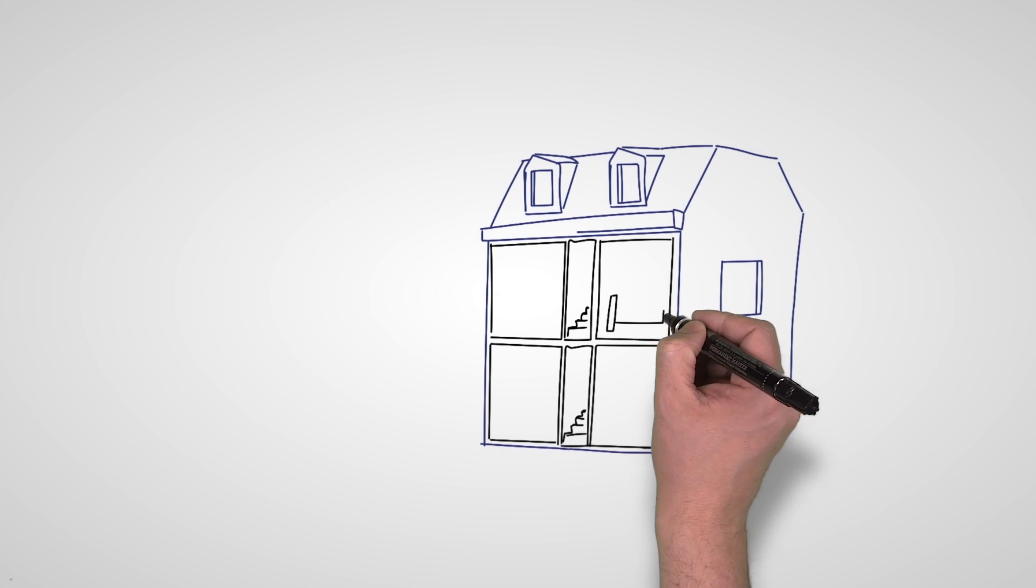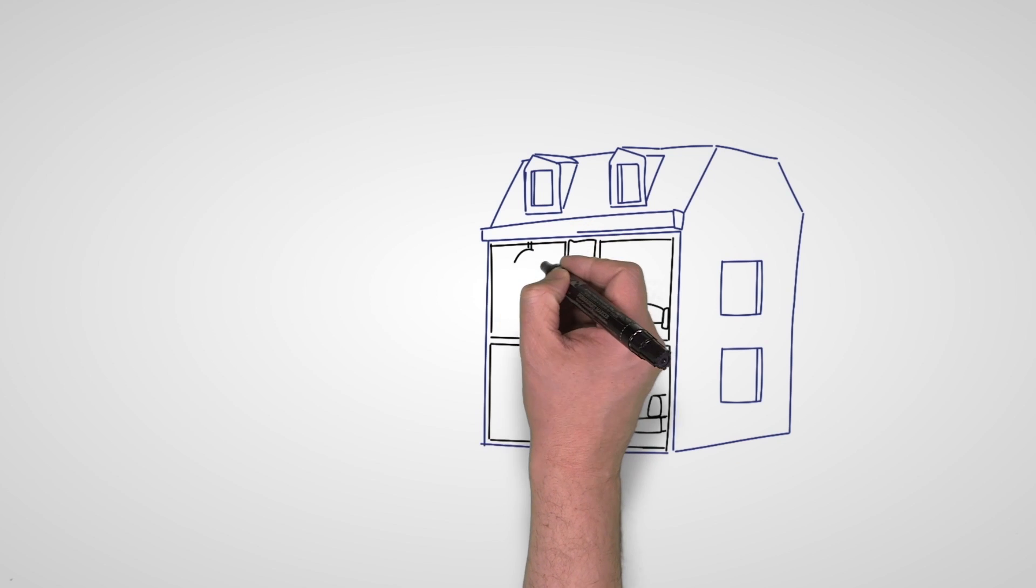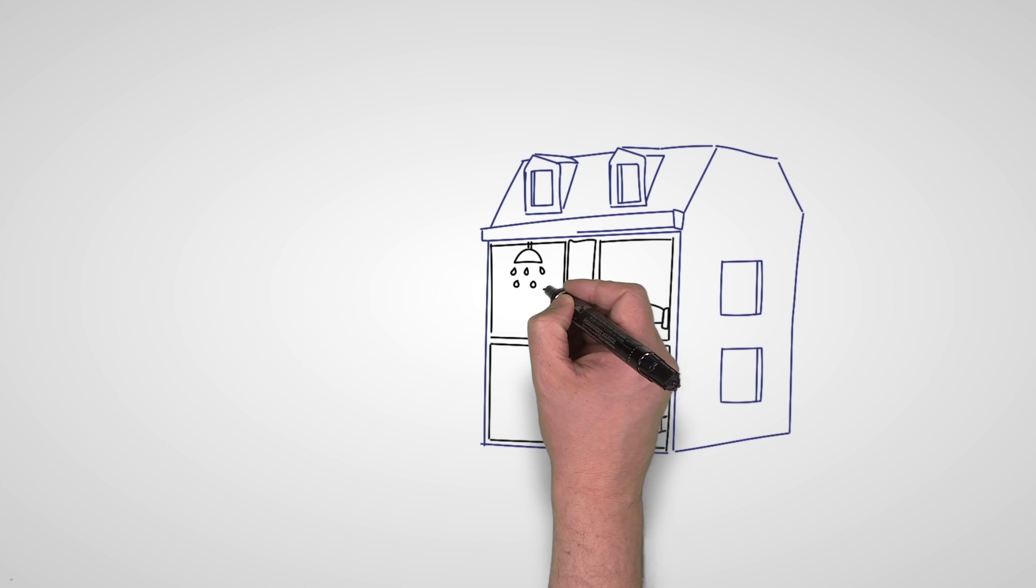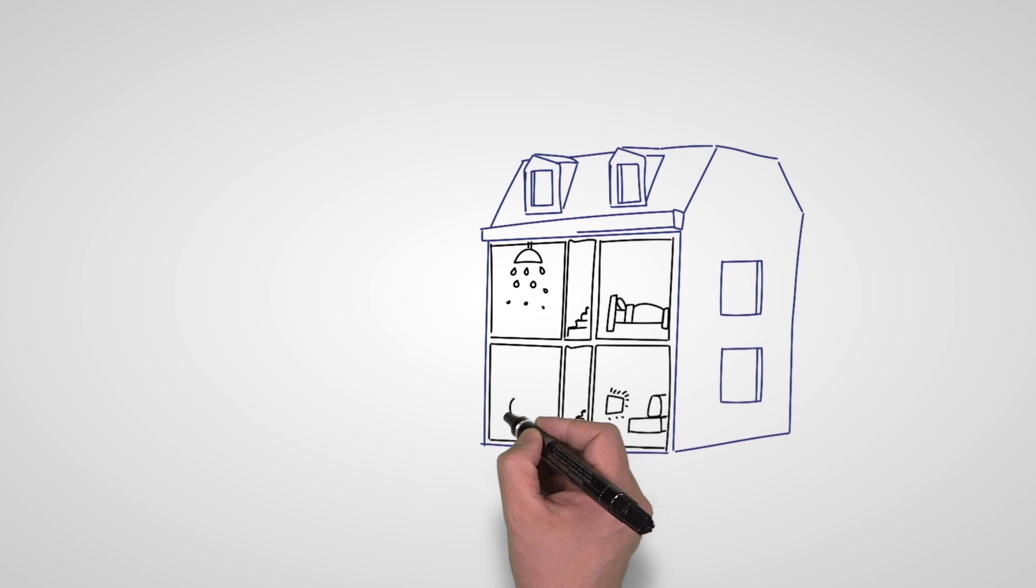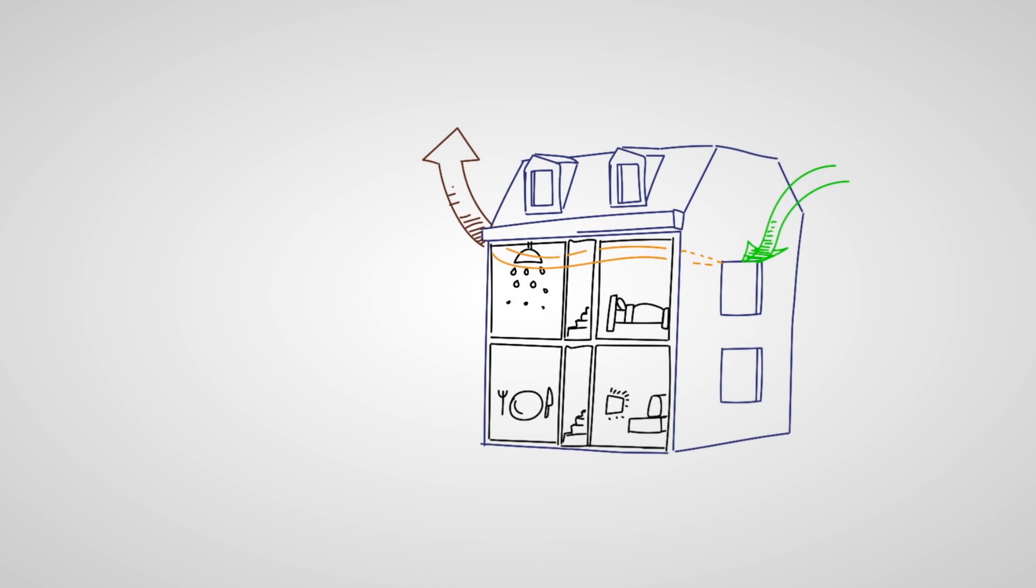What we really need is controlled ventilation. Fresh air is supplied through dry rooms such as the living room and bedrooms, and the polluted air is extracted through wet rooms such as the bathroom and kitchen. This will ensure the polluted air is, as it were, flushed from the home.